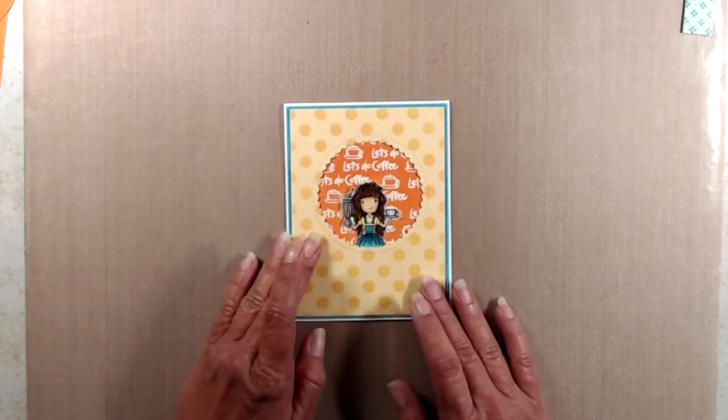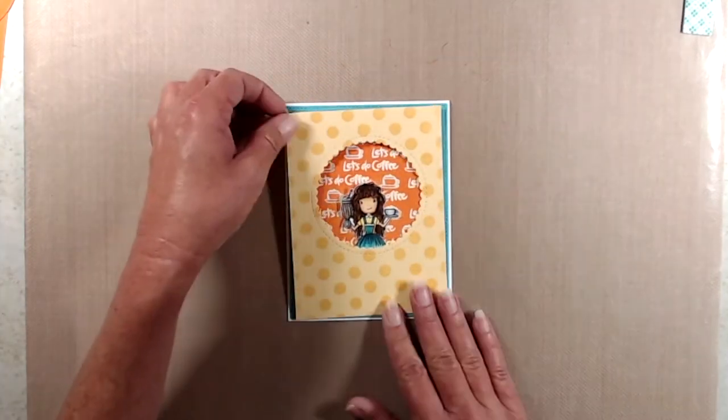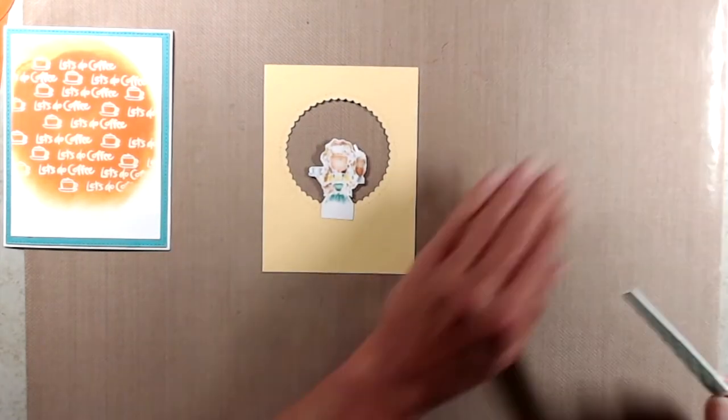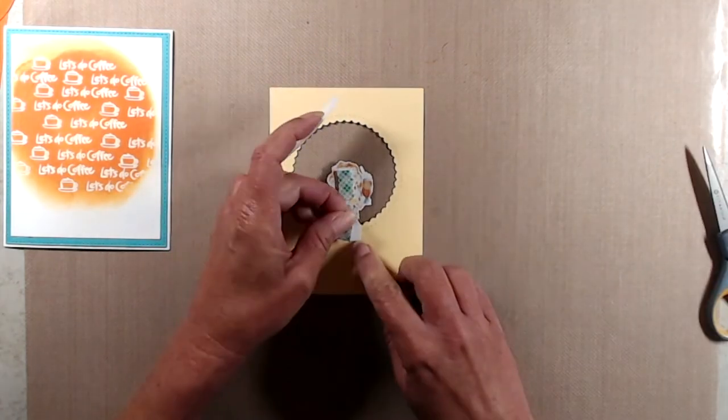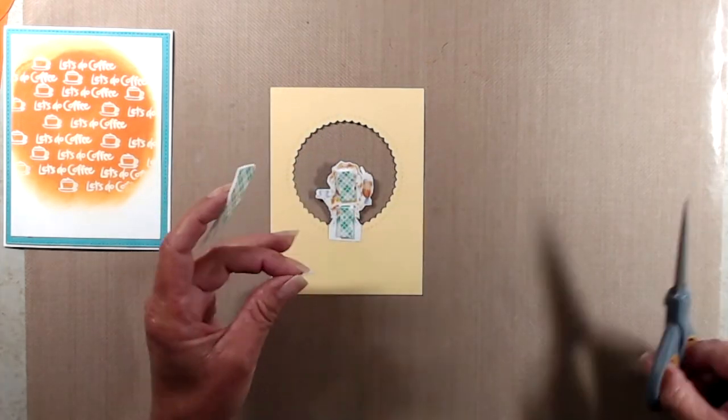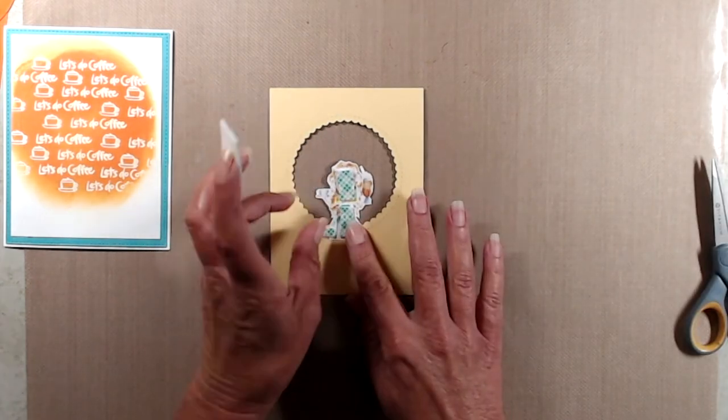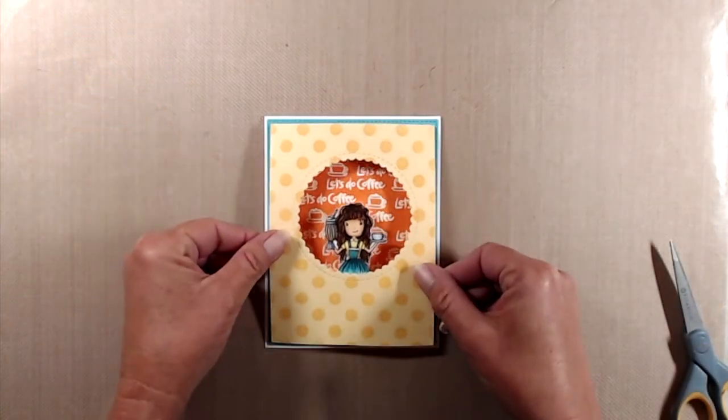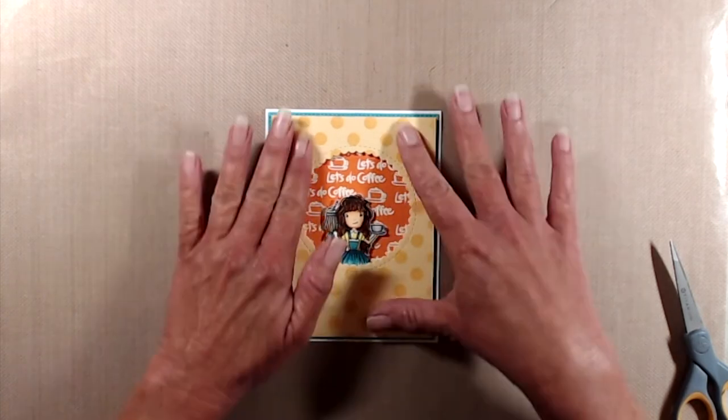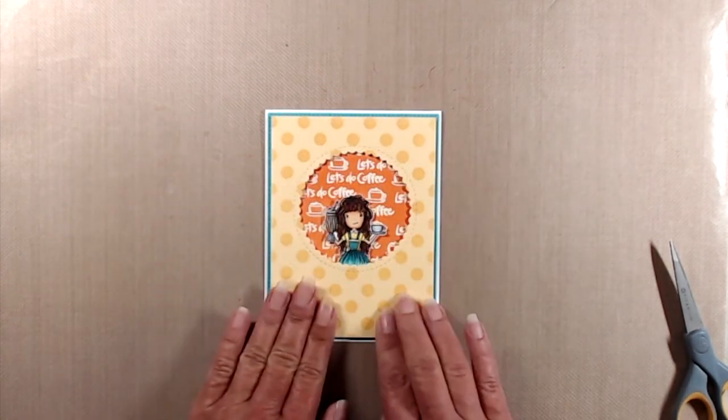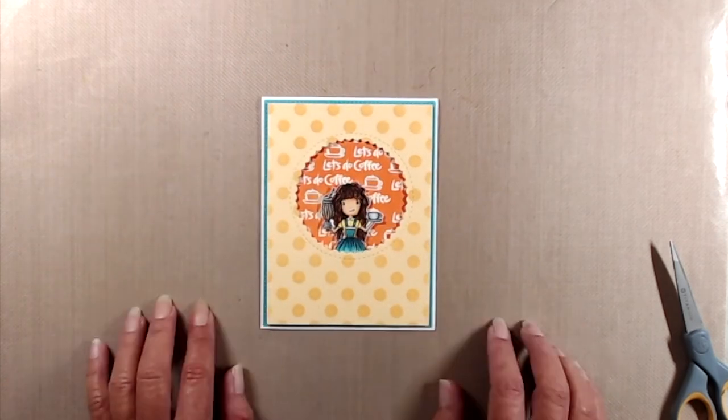And of course I put a whole bunch of foam tape on the back side of the yellow panel because I did want to have that popped up away from the ink blended embossed resist background, and put that into place. I kept trying to figure out what I wanted to do to finish it off, so I decided to stamp and emboss the words 'miss you' on a piece of teal cardstock and I embossed that with white embossing powder.